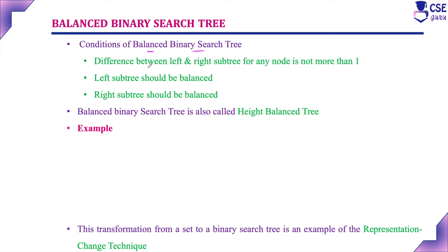The condition is: the difference between the left and right subtree of any node should not be more than 1 — it may be 0, plus 1, or minus 1. If a binary search tree satisfies this condition, that is nothing but a balanced binary search tree. Even the left subtree should be balanced and the right subtree should also be balanced. All subtrees in the given tree should be balanced. The balanced binary search tree is also called a height balanced tree or height balanced search tree.